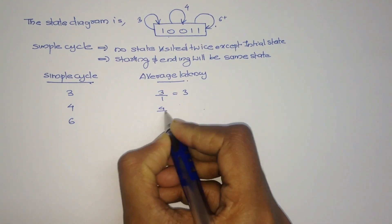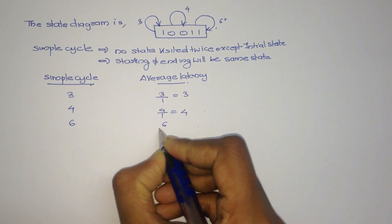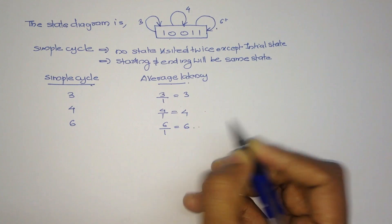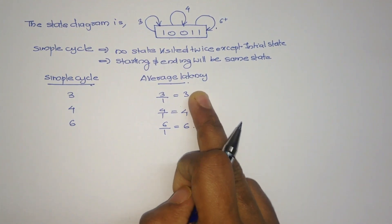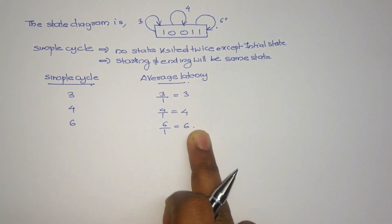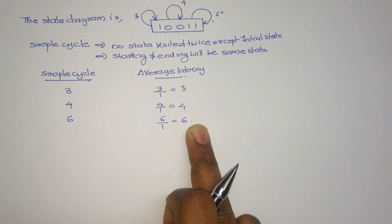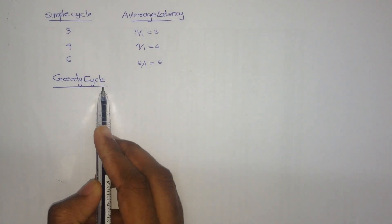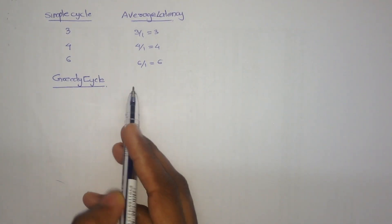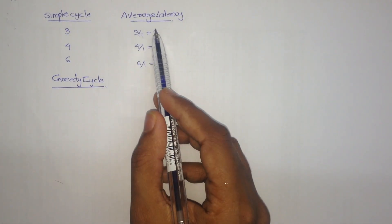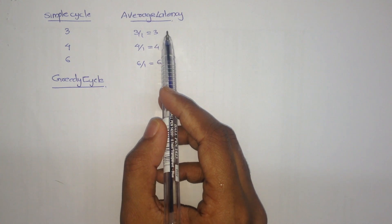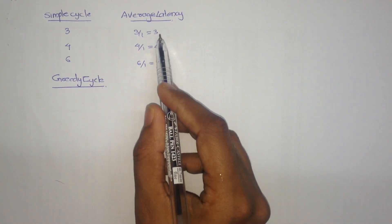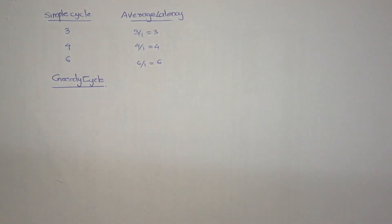So we write 3 divided by 1, which equals 3; 4 divided by 1, which equals 4; 6 divided by 1, which equals 6. Therefore, the average latency is also 3, 4, 6. Now we have to find the greedy cycle. First, we have to consider the minimum of the average latency.